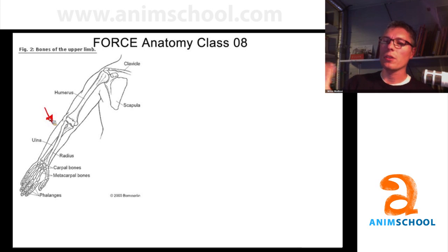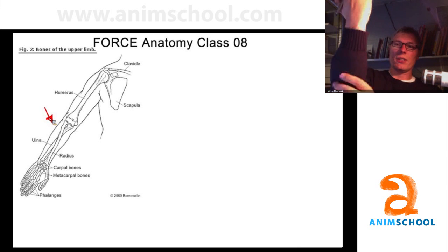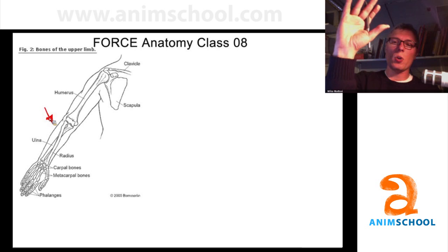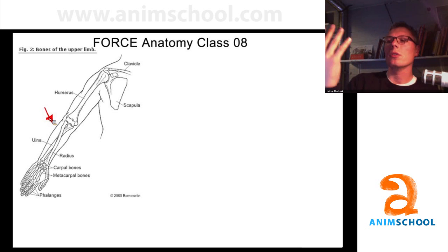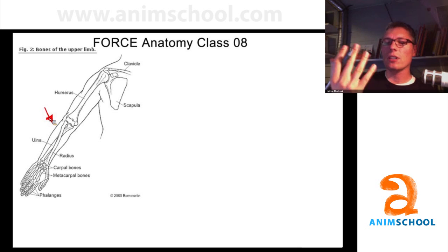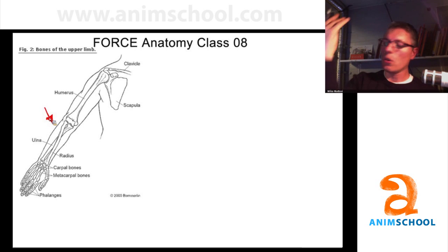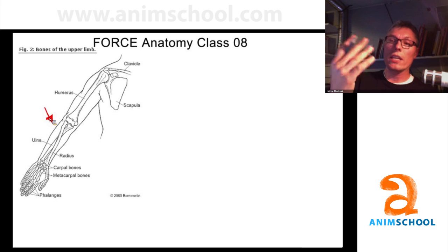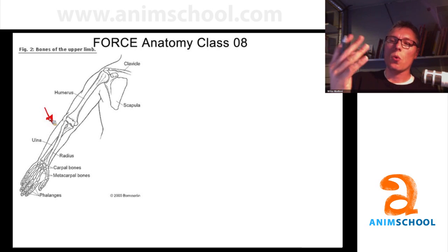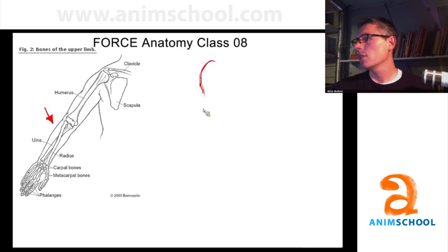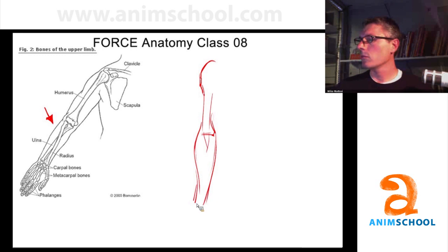There are two bones in the forearm — when your arm does this, you have one bone that's rotating over the other, and you can feel it in your own arm. You have the ulna, which is the bigger one on the bottom, and the radius, which moves on rotation over the ulna.